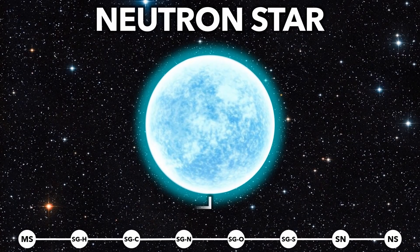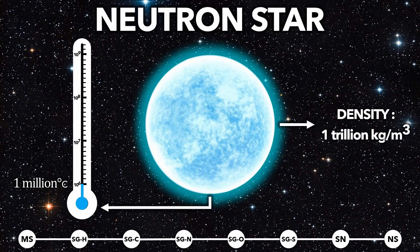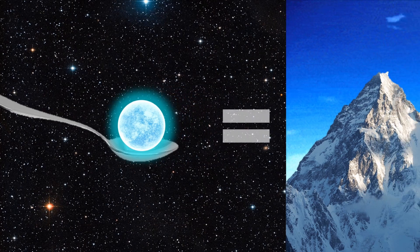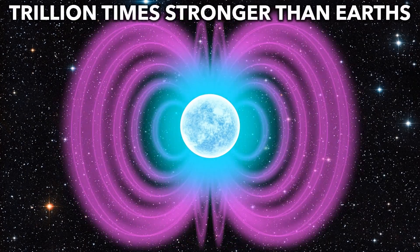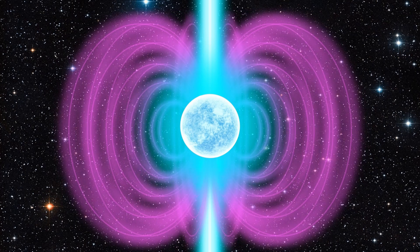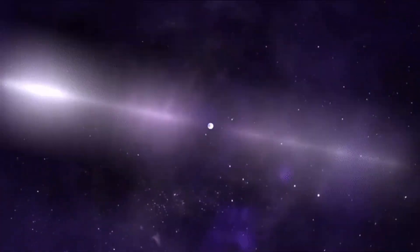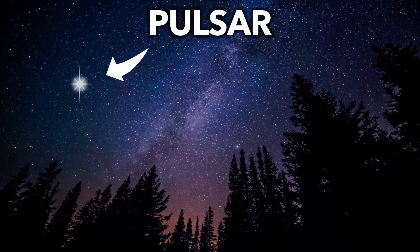The remaining neutron star is incredibly hot and dense. One teaspoon would weigh as much as Mount Everest. They produce extreme magnetic fields as they spin, firing powerful jets of charged particles that sweep through space. From Earth, they appear as pulsars.